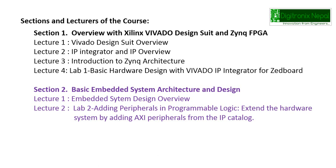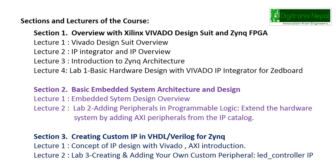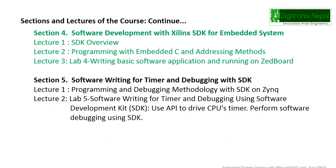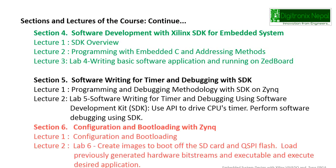In section three, we cover creating custom IP — we are going to create a custom AXI slave control IP. In section four, we have software development with Xilinx SDK for image applications. In section five, we have software writing for timer and debugging applications, where we are going to utilize the timer API.